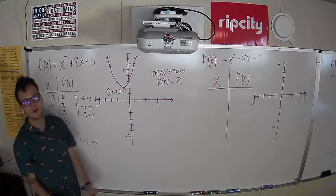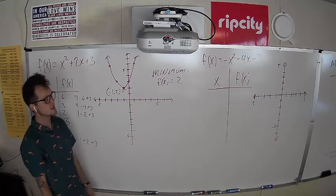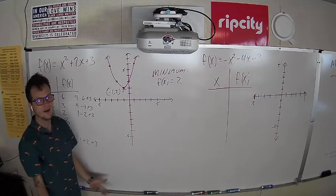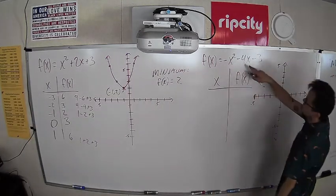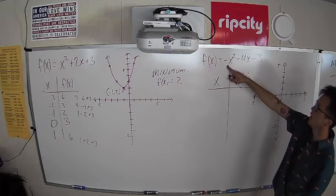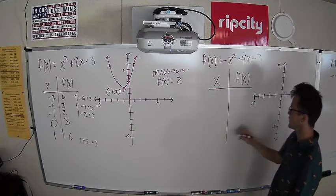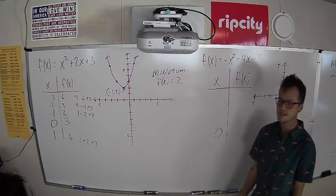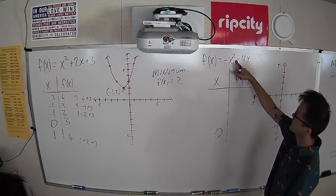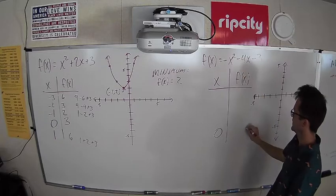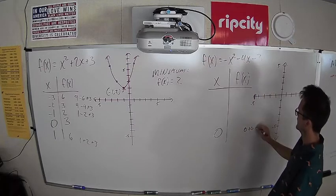Let's explore another one and see what happens. Here we have -x² - 4x - 3. So an a value of -1, b value of -4, c value of -3. Similarly, we're going to start with our 0. When we plug in 0: 0 squared is 0, negative 0 is 0, negative 4 times 0 is 0, minus 3. So our point is (0, -3).